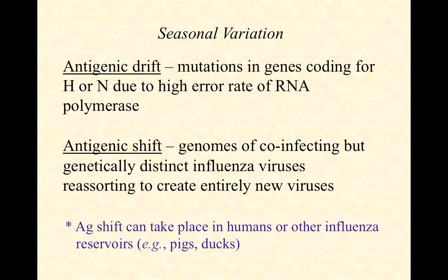Antigenic drift — mutations in genes coding for hemagglutinin and neuraminidase due to the high error rate of RNA polymerase — is why we need a new influenza vaccine year after year. The influenza we see this year, whether live or in vaccine form, is not going to be exactly the same as the influenza we see next year.